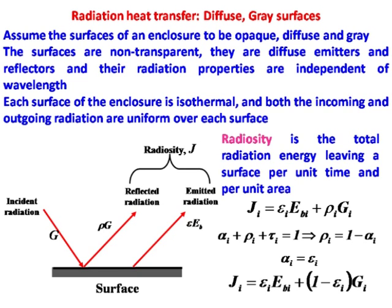What we are saying is, let us look at a diffuse gray surface. What we mean by a diffuse gray surface — we have already seen when we looked at Kirchhoff's law in detail — that is a surface where things are not dependent on the direction and the wavelength.